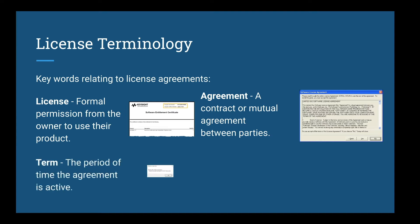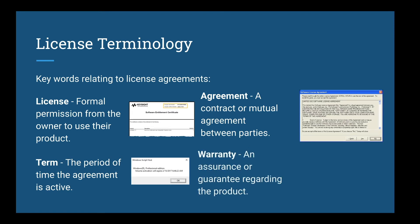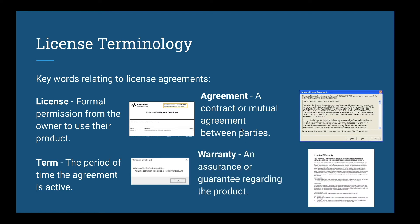A term is the period of a license agreement. The software license agreement could expire or could be forever. An example of a term is the one-year license that is offered to students in department schools for the Adobe Creative Cloud. A warranty is an assurance or guarantee regarding the product's usage. Software warranties are usually limited and state that the product works with the medium. If the product is sold as is, then any bugs or issues with the usage of the product are not covered under the warranty.